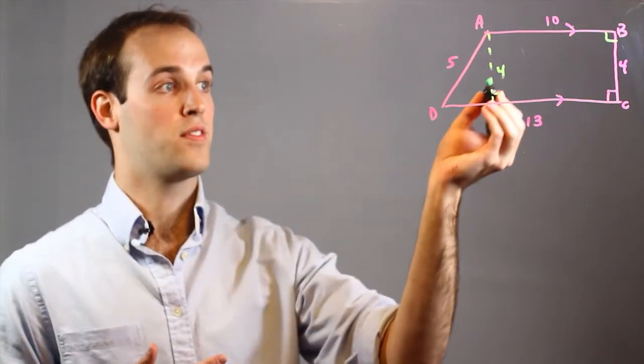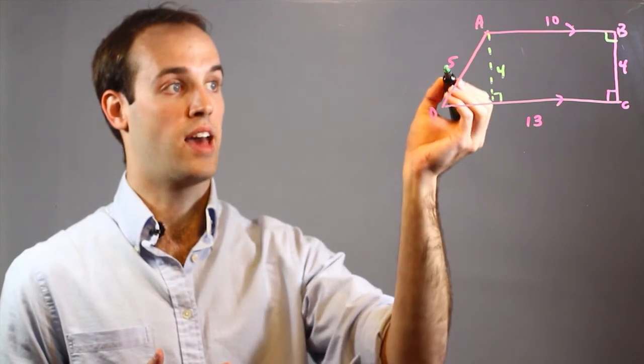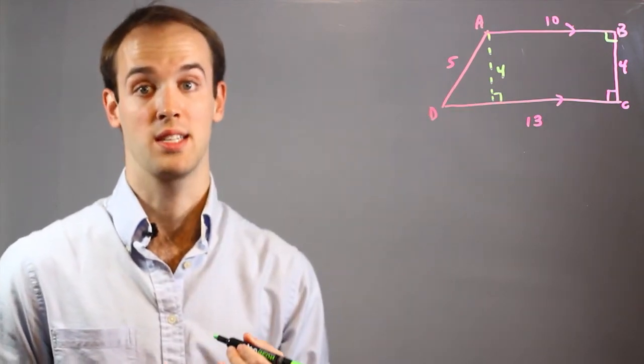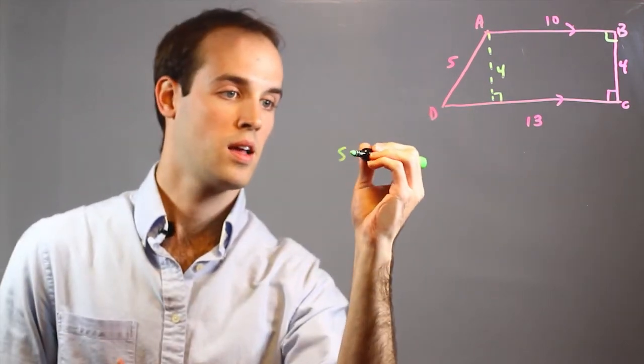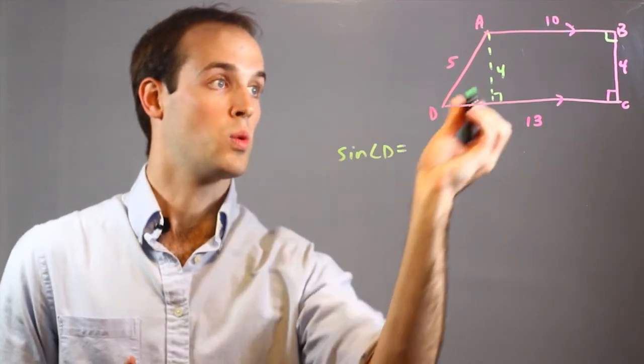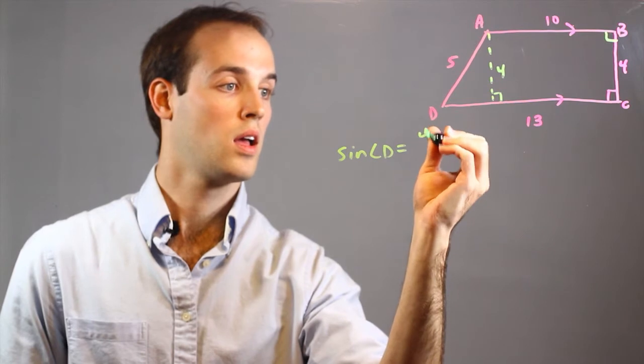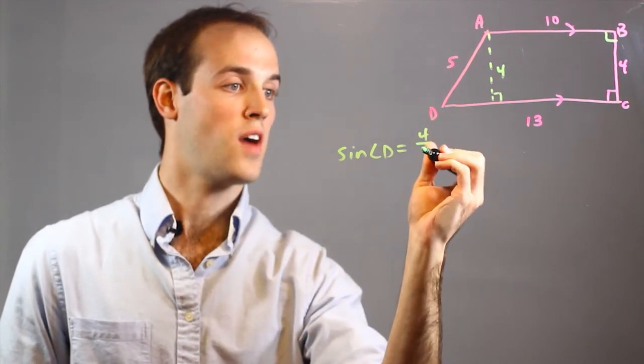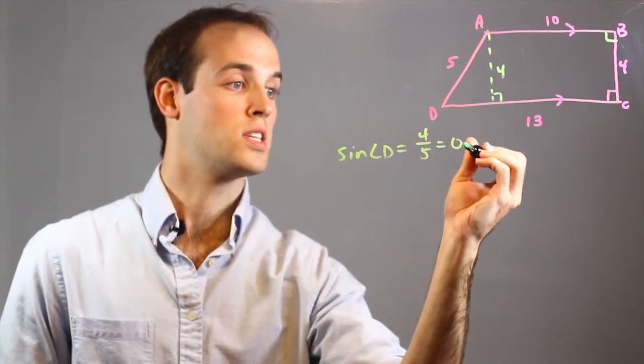And I have the side opposite to angle D and the hypotenuse so I know that I am going to be using sine. So I would do sine of angle D equals opposite 4 over hypotenuse 5 which is equal to 0.8.